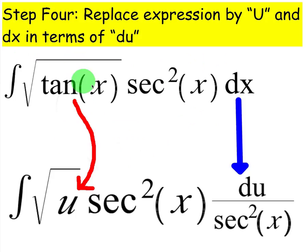Now you can see why you did that. When you replace tangent of x with u, you get square root of u, and then we'll replace dx with du over secant squared x. Now you can see these secant squareds are going to cancel, and you're just going to get the antiderivative of square root of u times du.